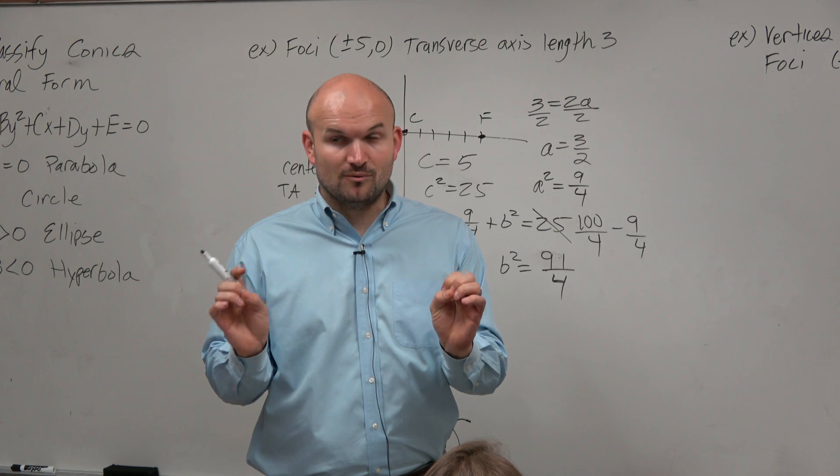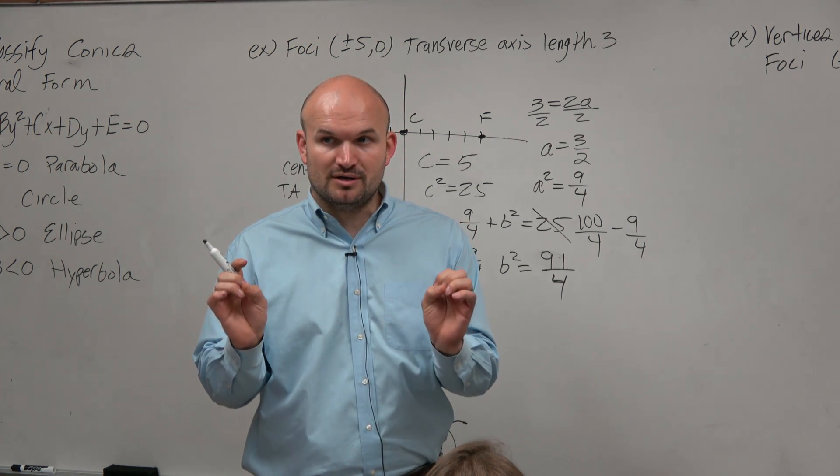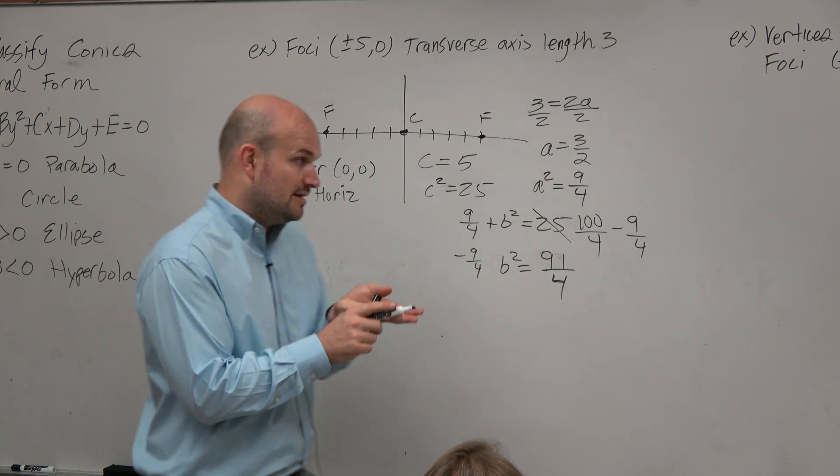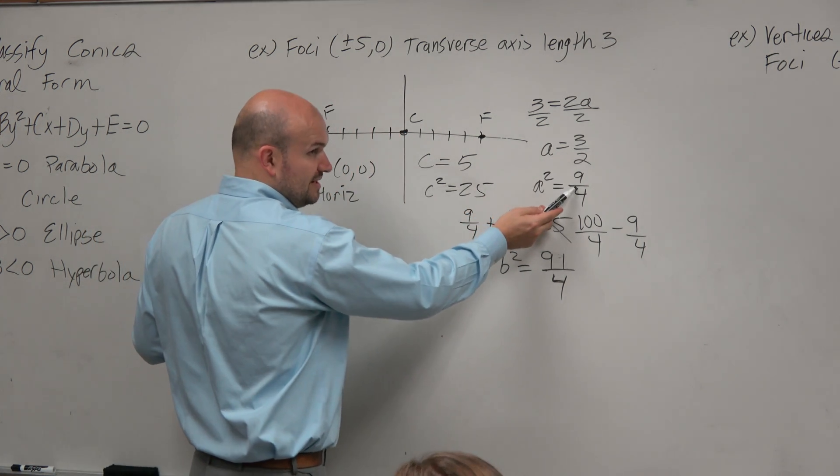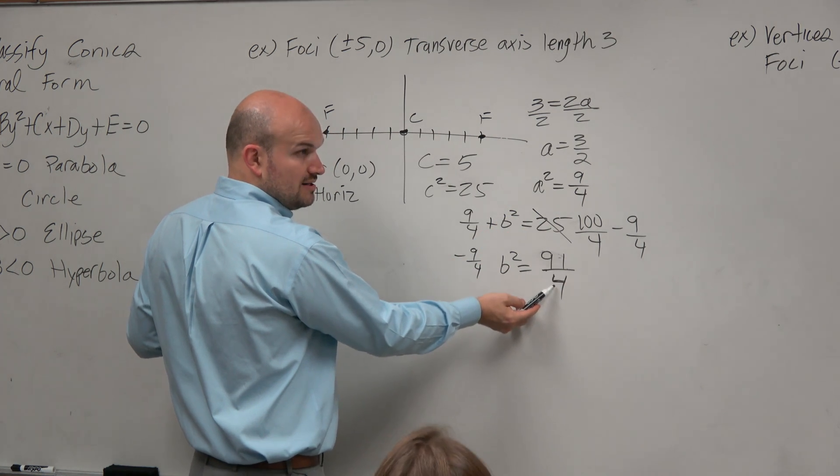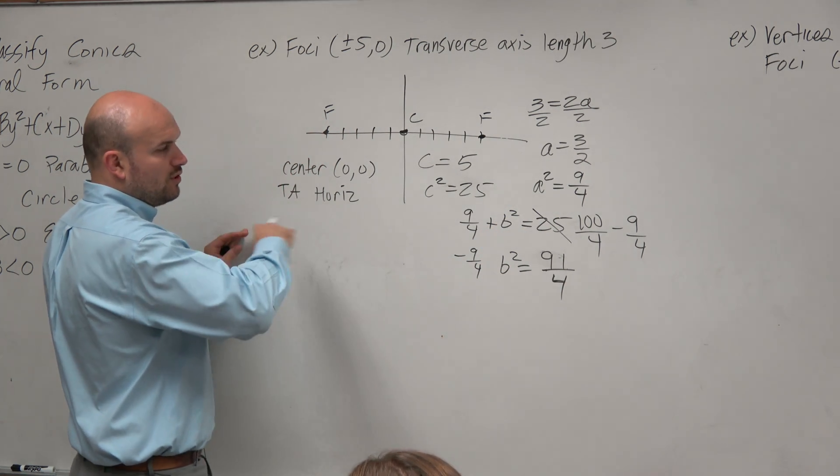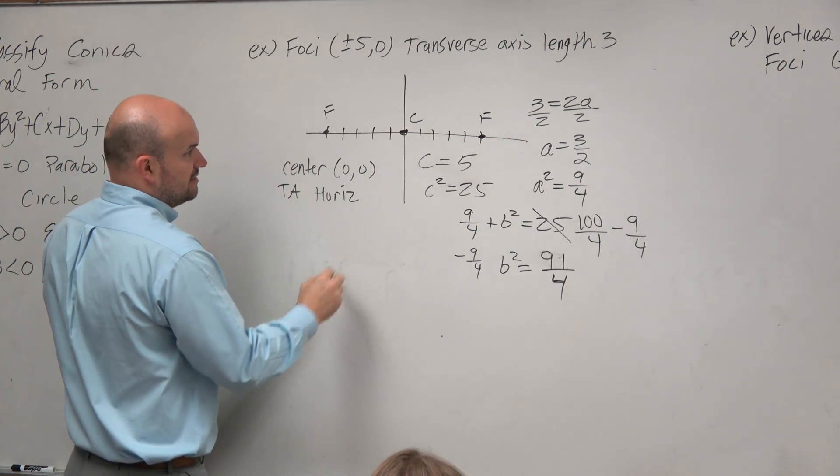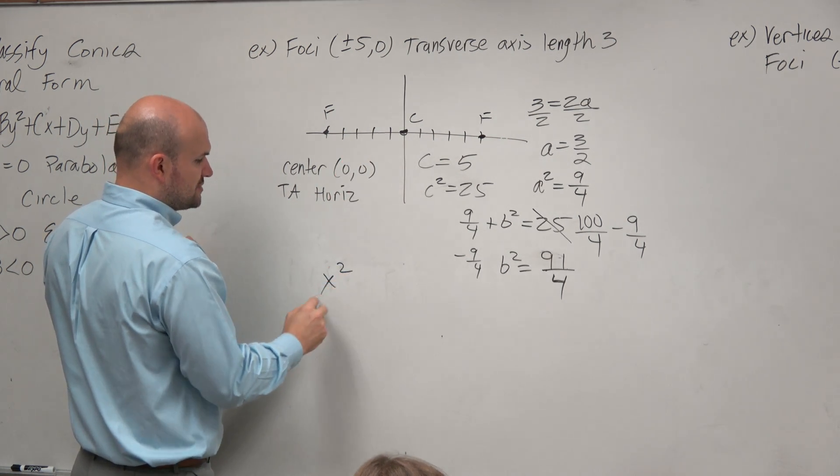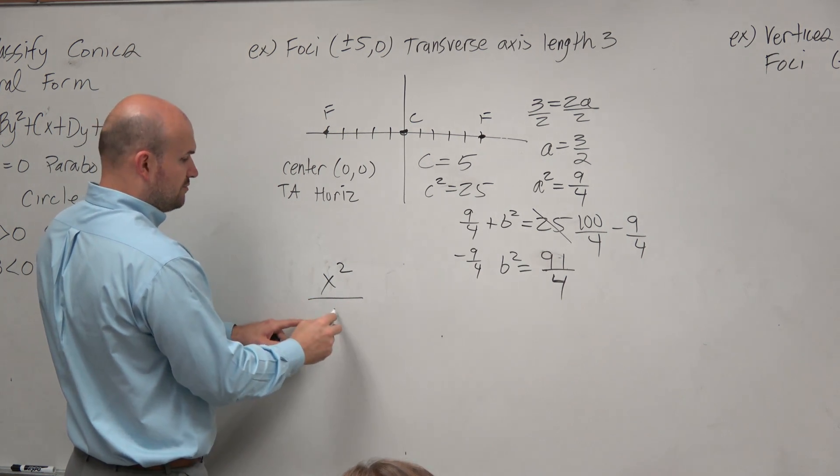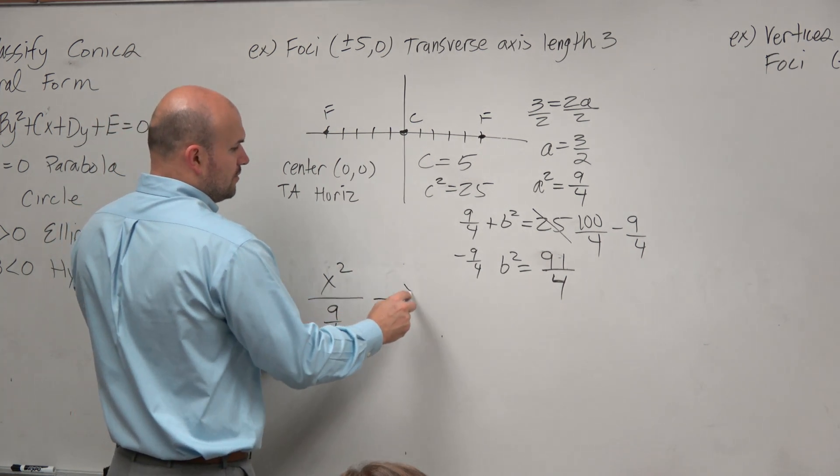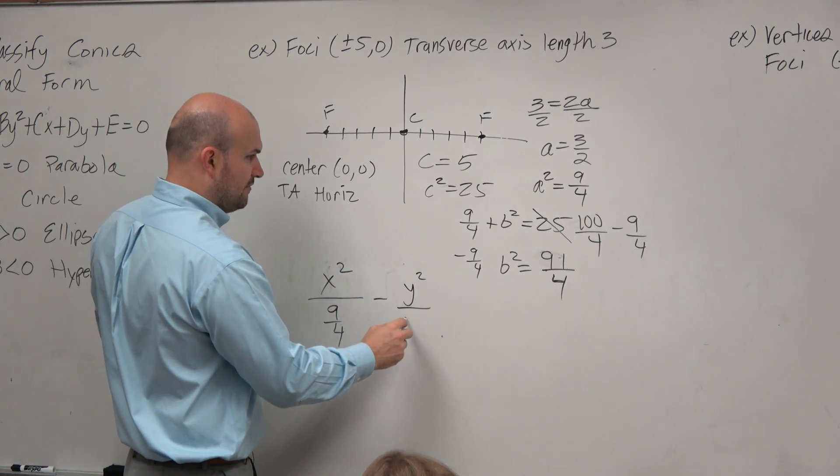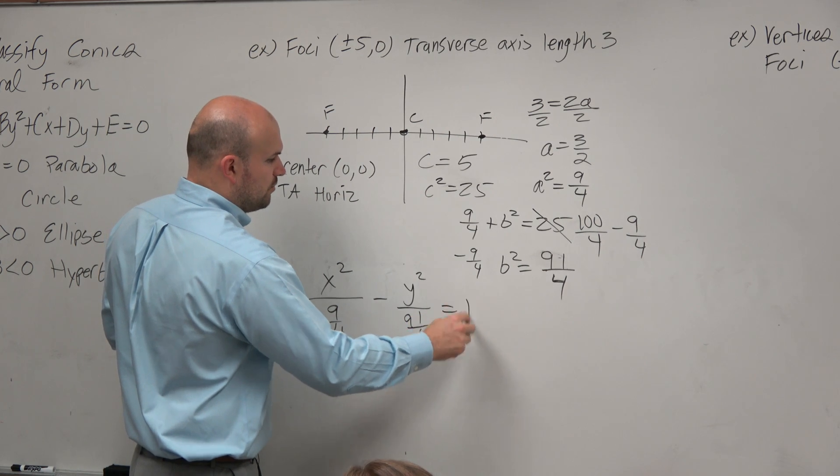So let's think about what is the information we need for an equation. We need the center. We need a squared and b squared. a squared we got. We have b squared. So we know that the transverse axis is horizontal. So therefore, I'm going to have x. Again, center is at (0,0). So I'll just do x squared over my a squared, which is 9 fourths, minus y squared over my b squared, which is 91 fourths, equals 1.